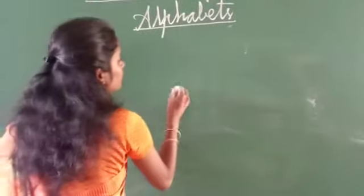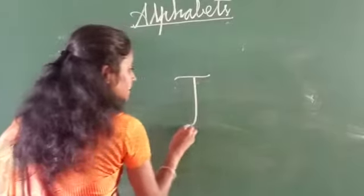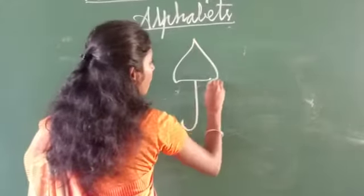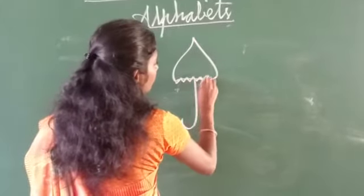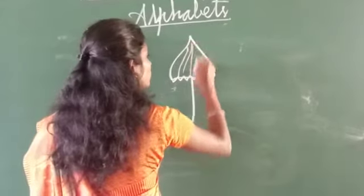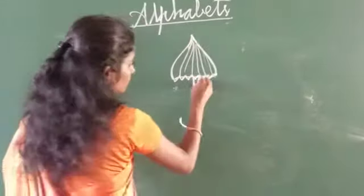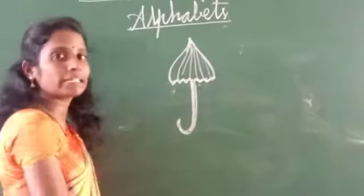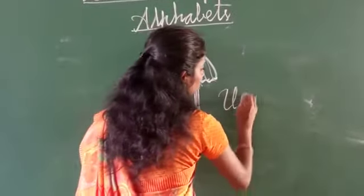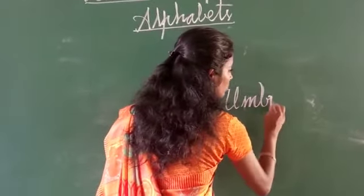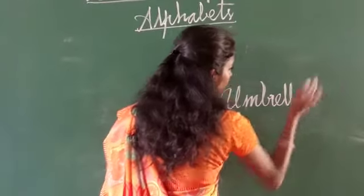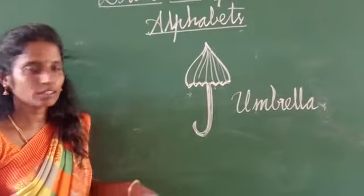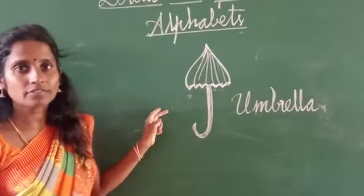Next alphabet J. What is this? This is an umbrella. This is an umbrella. The umbrella protects us from rain. It protects us from rain.